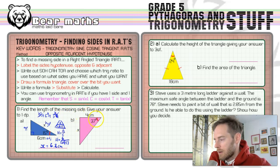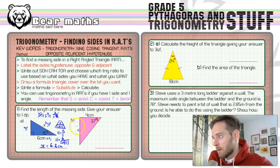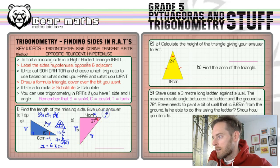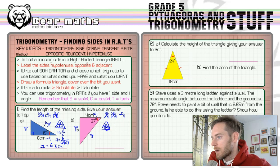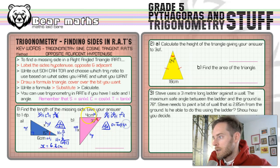Basically the same thing for the next question, but slightly different because we're using a different trig ratio. We still start by labelling: opposite is the thing we're finding, the adjacent is the known side, and the hypotenuse is the one we're not interested in. Write out SOHCAHTOA again until you get used to it. We've got O and A, so we choose TOA — the last group. We draw the TOA triangle. O equals tan of the angle multiplied by the adjacent: tan(37) multiplied by 4.